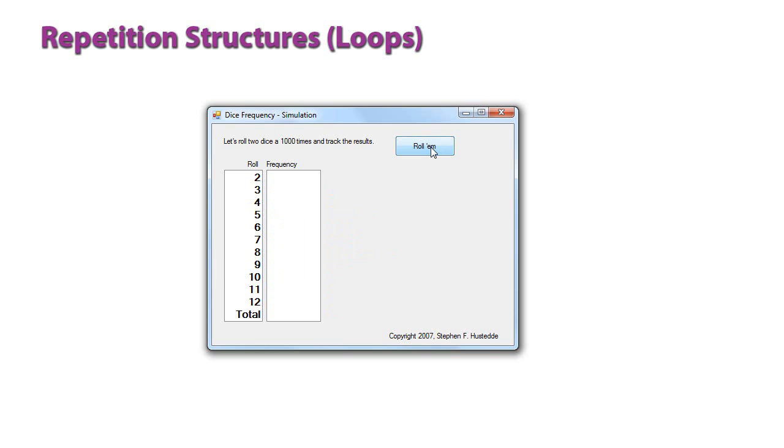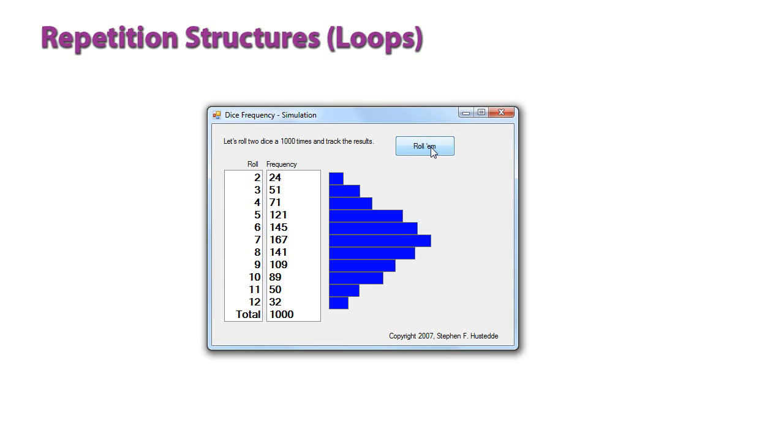And if I do it again, I'm going to get slightly different results. But it's pretty much going to be a very similar chart and very similar results within that 1,000. And you can see just how fast it actually does that. So that's a loop that's executing 1,000 times. That's a fixed iterative loop.